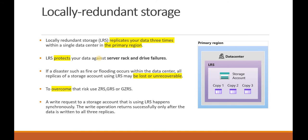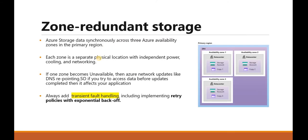Zone Redundant Storage (ZRS) — as the name specifies, in one primary region you may have three different availability zones: A, B, and C. Each zone has its own networking and storage. ZRS synchronously copies the data to three different zone locations. If an outage or transient failure occurs in one zone, DNS repointing comes into the picture and helps reconnect to the nearest available zone. Always use exponential backoff retries and retry policies in your storage redundancy architecture.